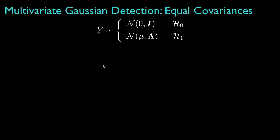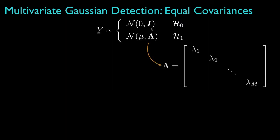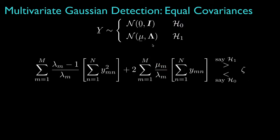In our previous lesson, we showed that all multivariate Gaussian hypothesis tests can be pre-processed so that the data have zero mean and an identity covariance for hypothesis zero, and are uncorrelated with a diagonal covariance for hypothesis one. The general form for the decision test looks like this, where M is the number of elements in the observed data vectors, and N is the number of independent observations of these data vectors.